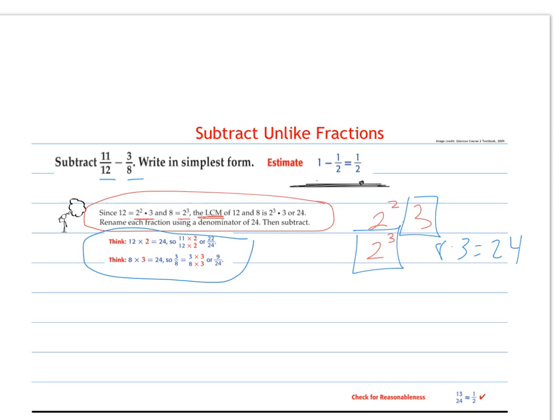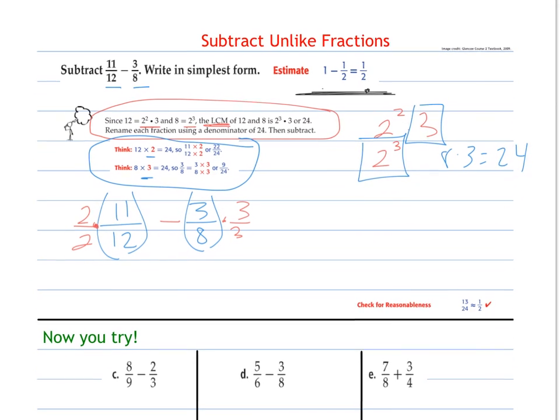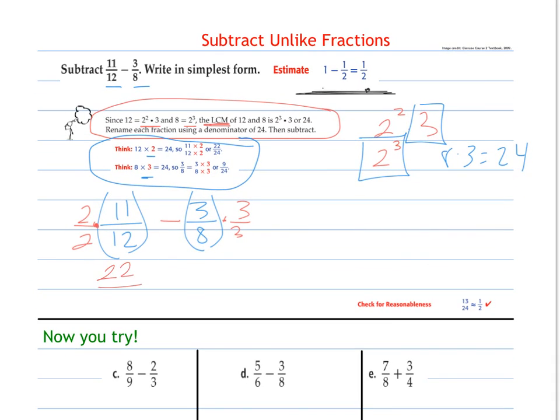So what you see here is how do we do that? Well, I get twelve to twenty-four by multiplying by two, and I get eight to twenty-four by multiplying by three. So we're going to take eleven twelfths and multiply the whole thing by two over two, and I'm going to take three-eighths and multiply that whole thing by three over three. So what I'm really working with is twenty-two twenty-fourths minus nine twenty-fourths.